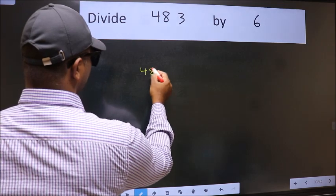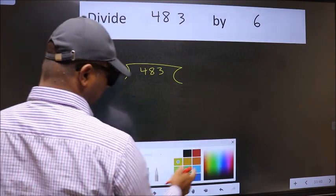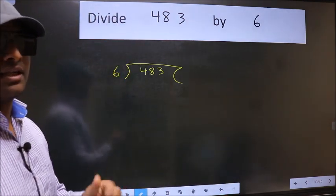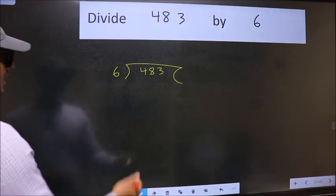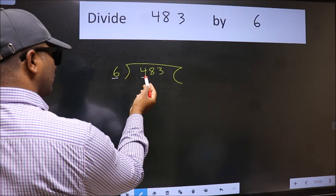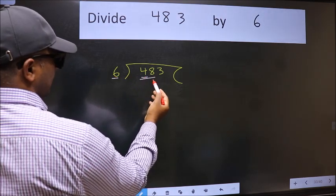Okay, 483 and 6 here. This is your step 1. Next, here we have 4 and here 6. 4 is smaller than 6.